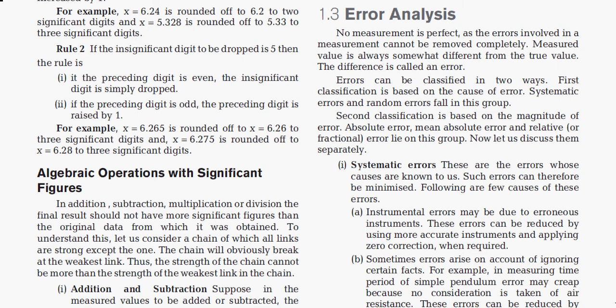Let's start with the third part of the video: error and analysis. No measurement is perfect — the error involved in a measurement cannot be removed completely. The measured value is always somewhat different from the true value; this difference is called error. Error can be classified in two ways: first, based on cause — systematic error and random error; second, based on magnitude — absolute error, mean absolute error, and relative error.